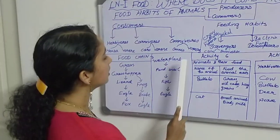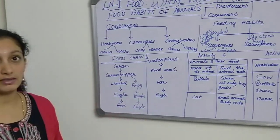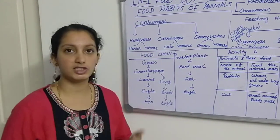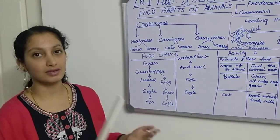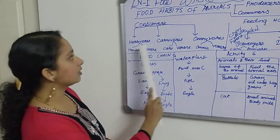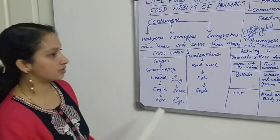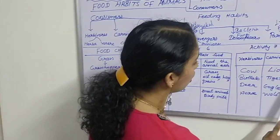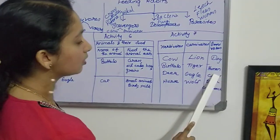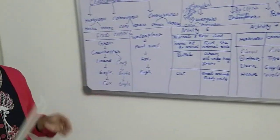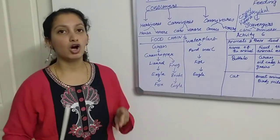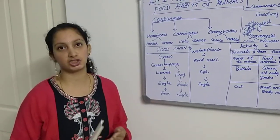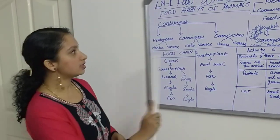Then omnivorous — these are either plant eaters or flesh eaters. We can remember them as being like vegetarian or non-vegetarian. Examples for omnivorous are dog, human being, crow, bear, and cockroaches. Omnivorous animals can eat either plants or flesh or meat. So this is about consumers.